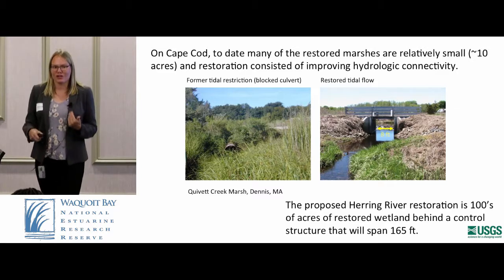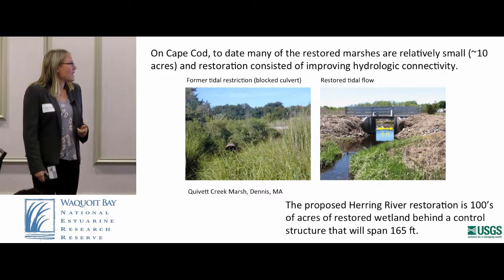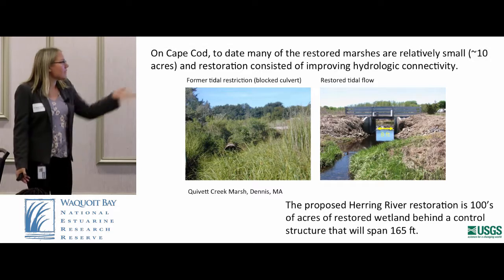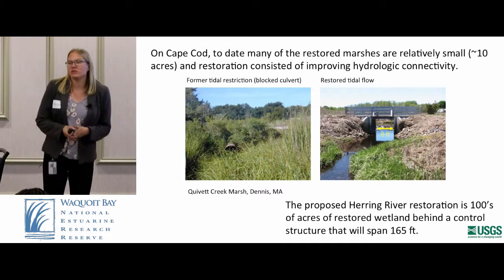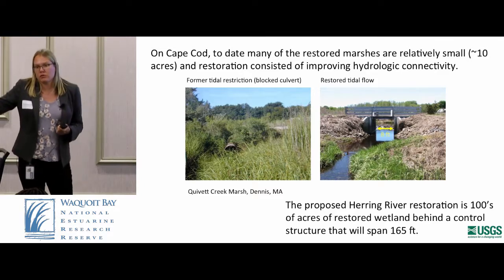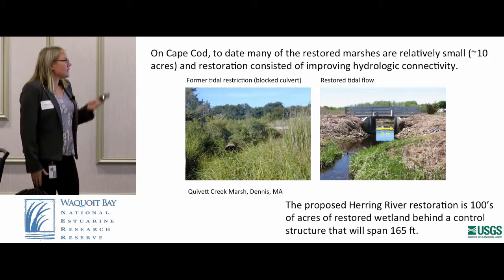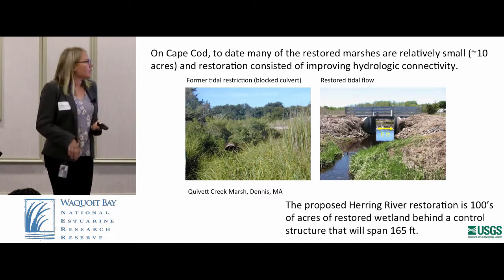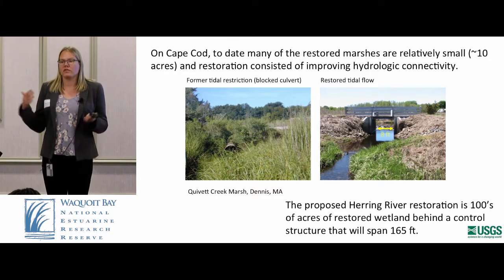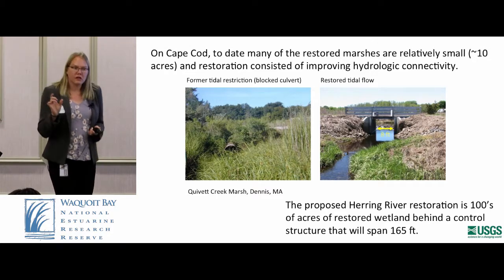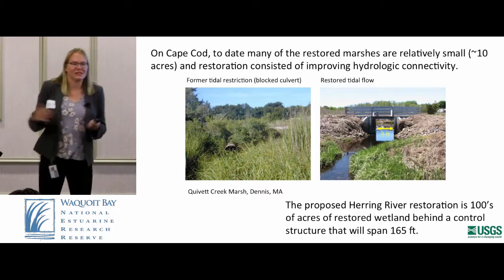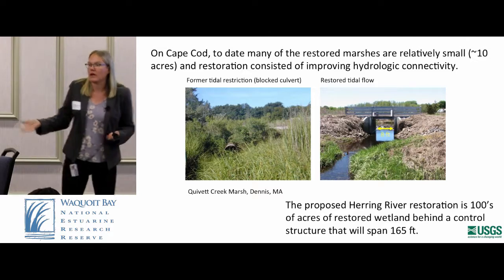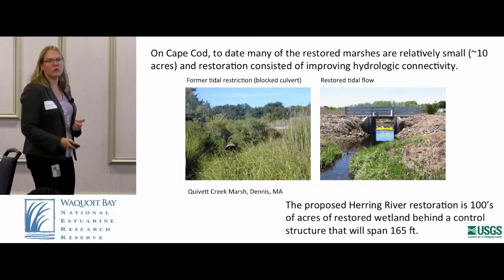Most restoration on Cape Cod has been at smaller sites and smaller scale. This is Quivet Creek in Dennis — the former culvert nearly blocked all tidal flow, and it was replaced with a nice opening that restored the full tidal range. I'd like to note that opening is eight feet wide; the Herring River, once restored, will be 165 feet wide. This analog restored about 10 acres, while the Herring River project will hopefully restore around 1,000 acres. We don't have an analog right now at the scale of the Herring River, but we work with what we have.